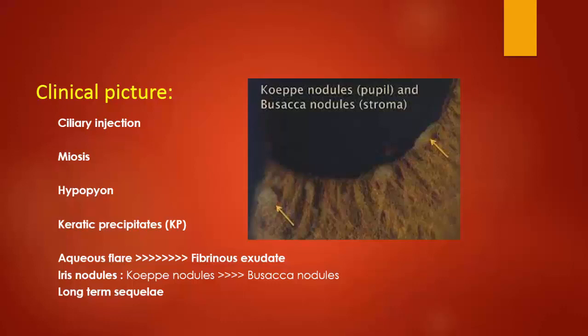Iris nodules, if they are at the pupillary margin, are called Koeppe nodules, and if they are in the stroma of the iris, they are called Busacca nodules. The long-term sequelae of anterior uveitis include synechiae, complicated cataract, and glaucoma.